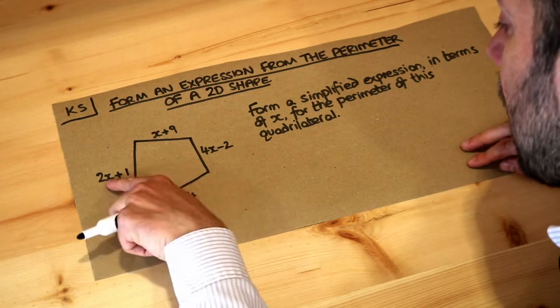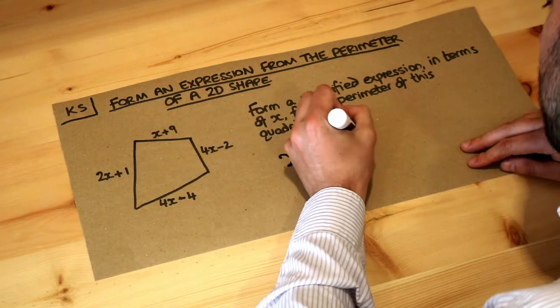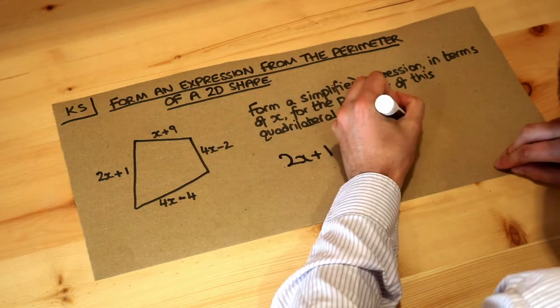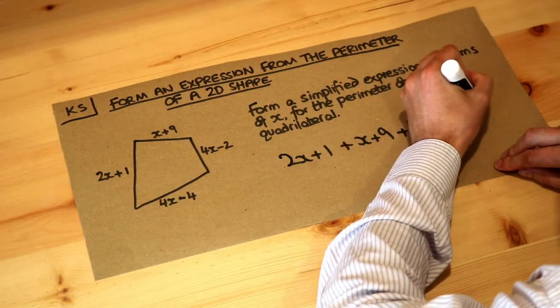So let's do that. We're going to add this length: 2x plus 1, plus x plus 9, plus 4x minus 2, plus this final length of 4x minus 4.